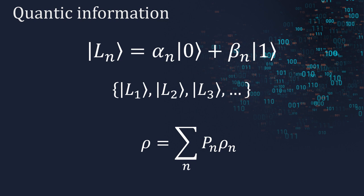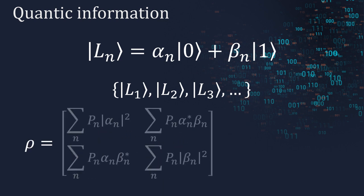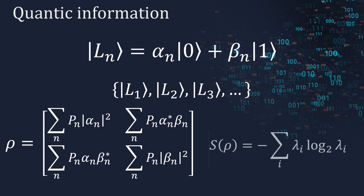Knowing that, an analogous expression to classical Shannon entropy could be built with a quantum message. Firstly, an average letter state can be created as the weighted sum of the density matrices of the message. From here, it can be defined the von Neumann entropy, which represents a measure of the amount of statistical uncertainty in a quantum state, where the lambdas are the eigenvalues of the density matrix.